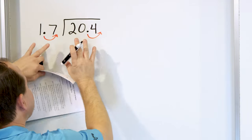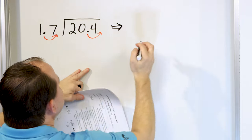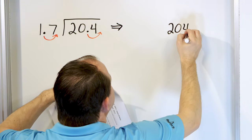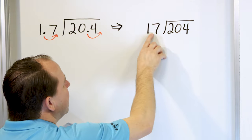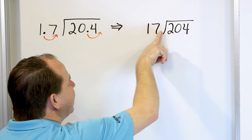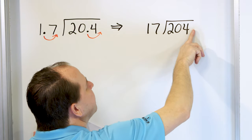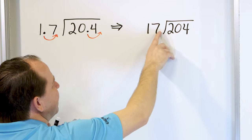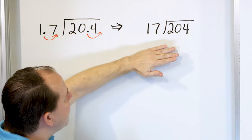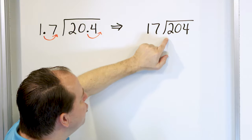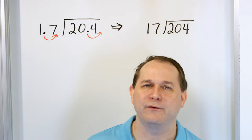So then what we're really going to do is solve a very closely related problem, which is 204 divided by 17. The original decimal was here, and we moved it one spot to the right, so now we have 17. The original decimal was also moved one spot to the right on the inside, giving us 204. So now we're going to solve 204 divided by 17 — we already know how to solve that problem.